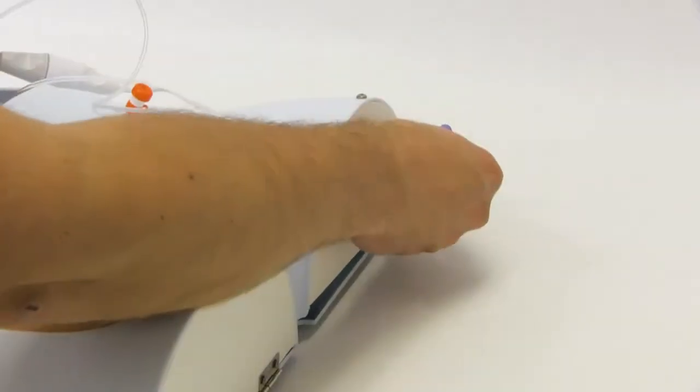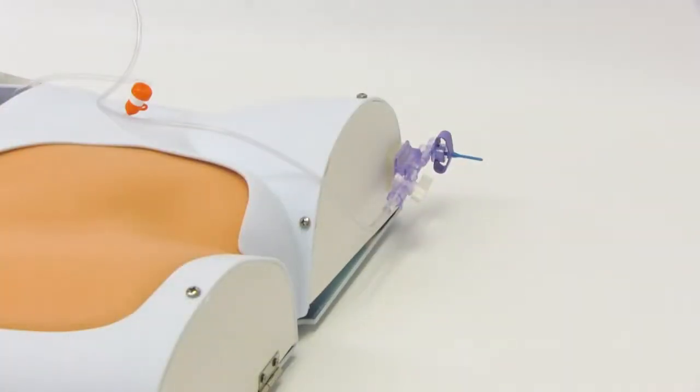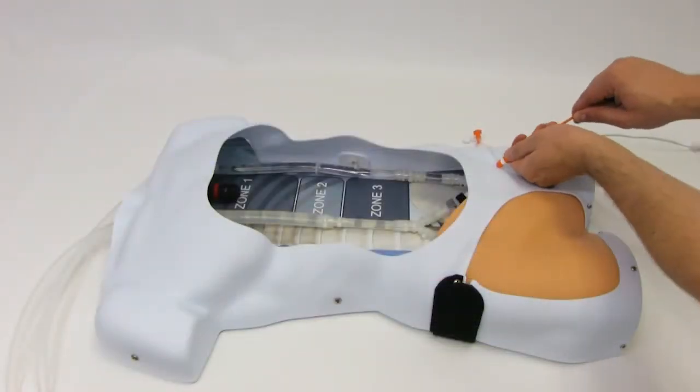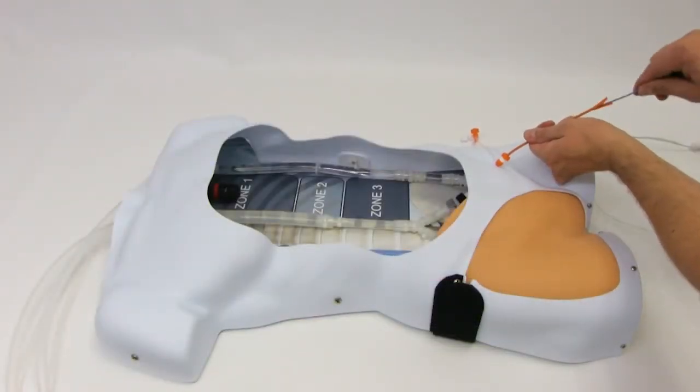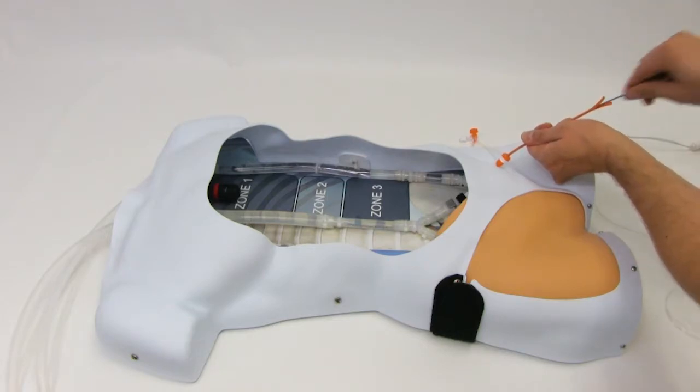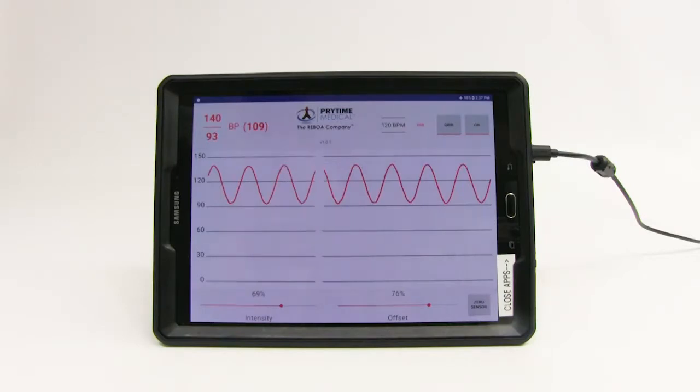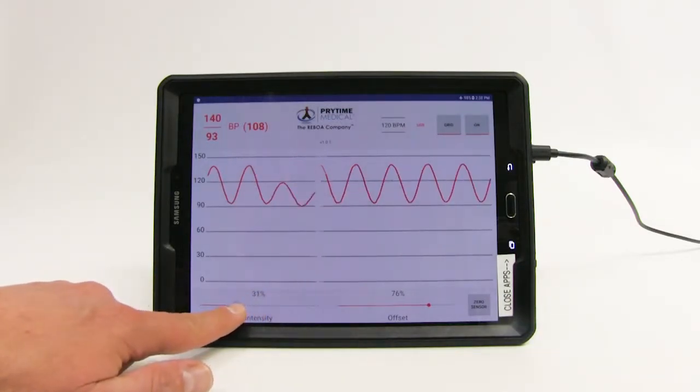Connect the blood pressure monitoring transducer to the leg cap of the model. With the catheter still outside of the model, press the zero sensor button on the screen to calibrate the sensor's readings to atmosphere. To get a blood pressure monitor reading, prepare the REBOA catheter per current setup procedures and insert it into the model. Use the two sliding bars on the screen labeled intensity and offset to adjust the waveform as needed.